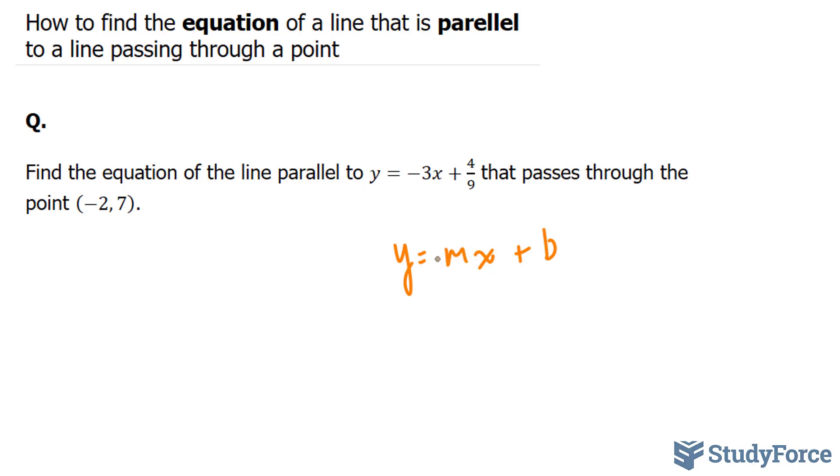This m value right here represents the slope, and you'll notice that the m value is always connected to the x. In other words, that m value is always being multiplied to the x.